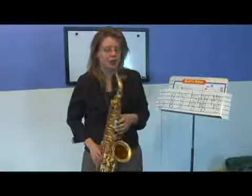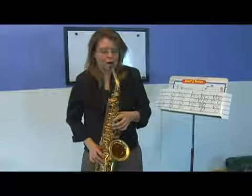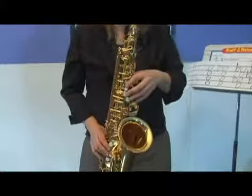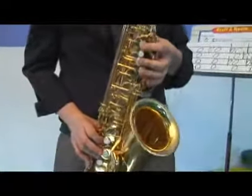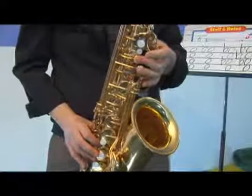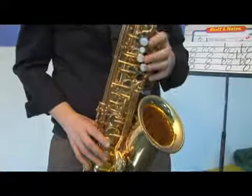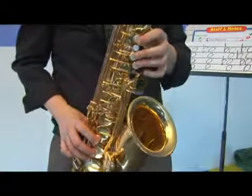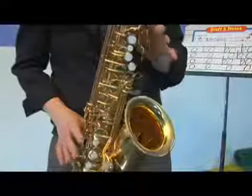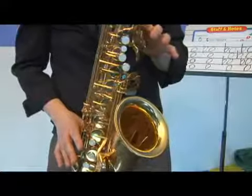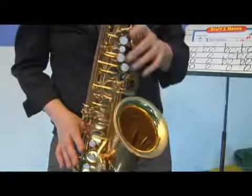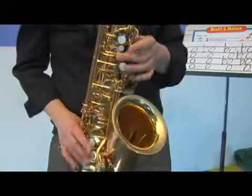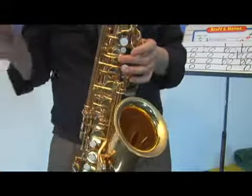Alright, here we have D. Now remember the minor seventh is C. Here's another way to look at it real quick. When you have a D and your major, your seventh is going to be C sharp. Now your minor seventh is going to be C because it's a half step down from that.